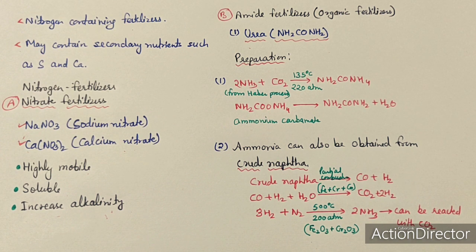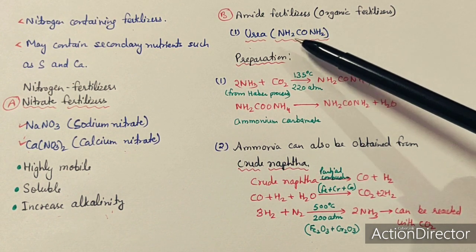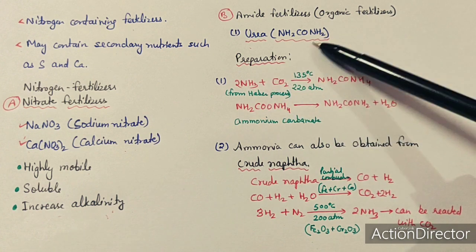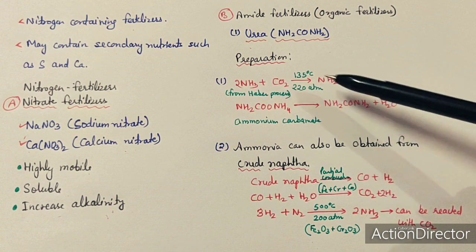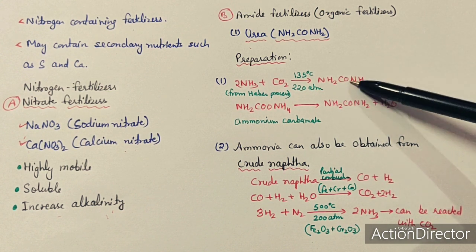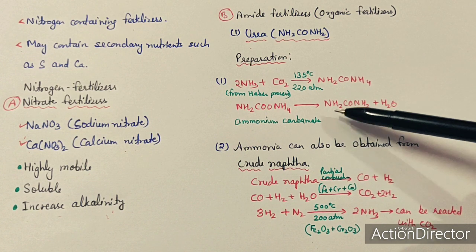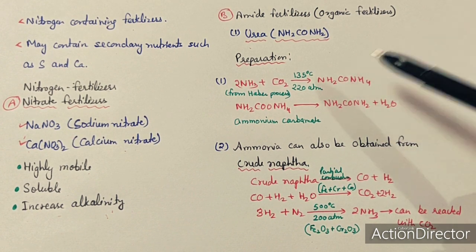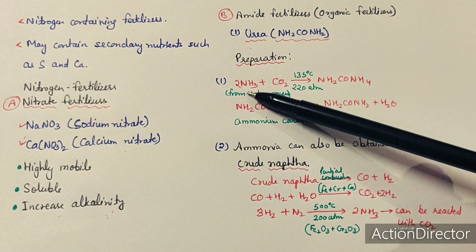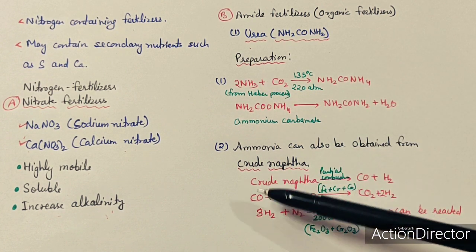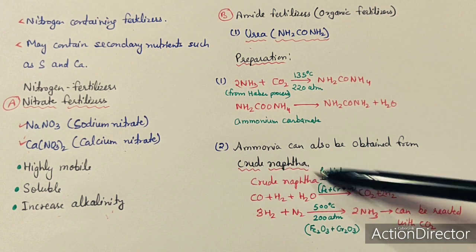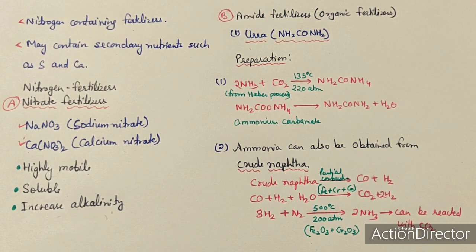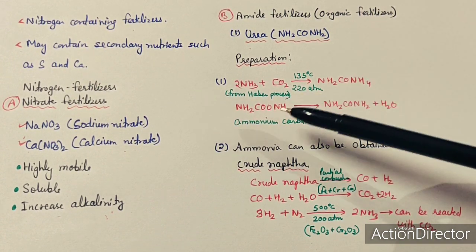The first example of amide fertilizer is urea — NH₂CONH₂. Preparation of urea: when ammonia reacts with carbon dioxide, ammonium carbamate is formed, and heating ammonium carbamate gives urea. The ammonia used here comes from the Haber process. A second method uses crude naphtha: partial combustion of crude naphtha gives CO and H₂ (syngas).